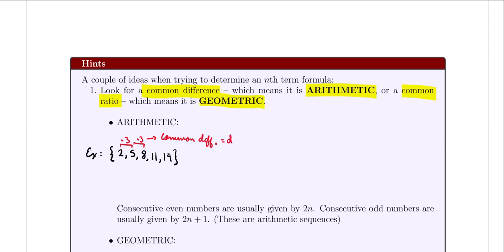The formula for finding the nth term of an arithmetic sequence is: a sub n equals the first term plus n minus 1 times the common difference. The quick way to get the common difference d is: d equals a sub (n+1) minus a sub n — just the difference between two consecutive terms.